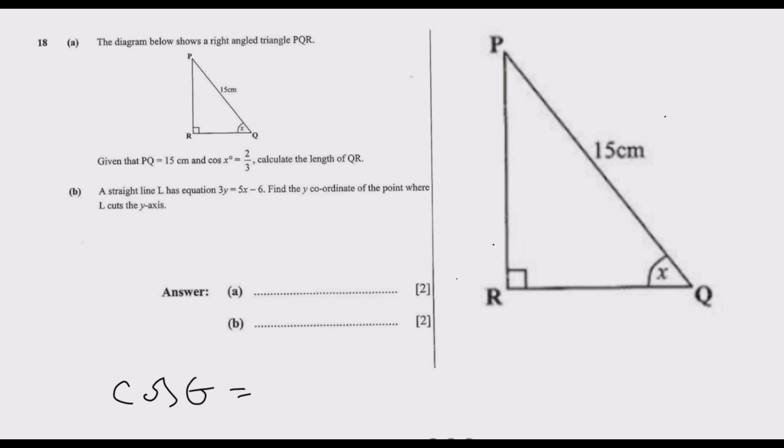In this case, the hypotenuse is the longest side that we've been given, which is the 15 centimeters. The adjacent is where the angle is meeting a partner, so this side. The opposite side is here. Knowing that cosine x is 2 over 3, we have cosine x equals 2 over 3, which equals adjacent over hypotenuse.